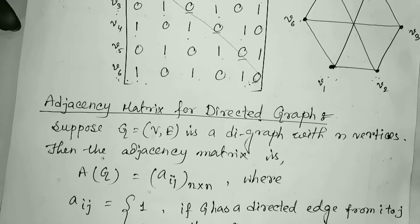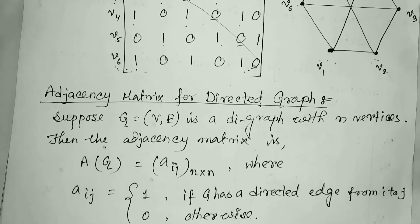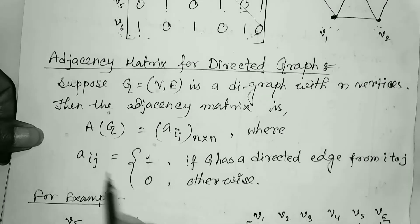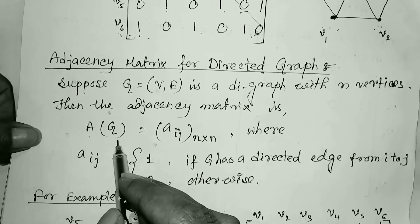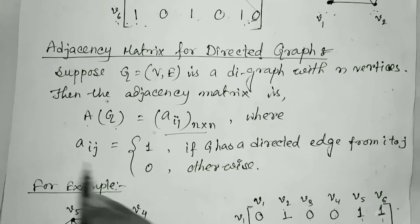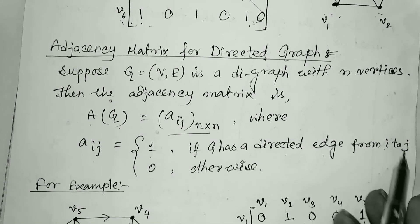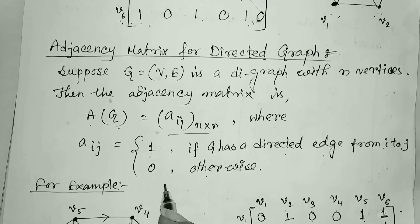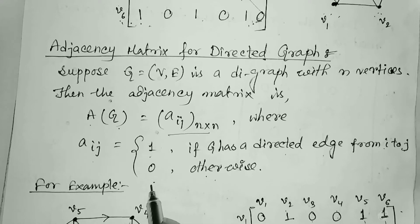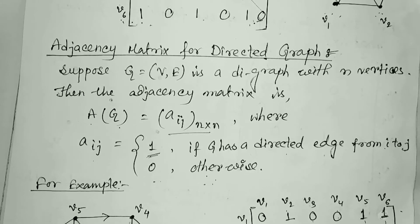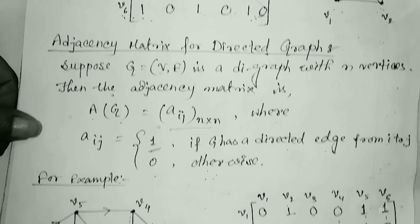Next, the adjacency matrix for a directed graph. If the given graph is directed, A(G) is the adjacency matrix where A(i,j) = 1 if G has a directed edge from vertex i to vertex j, and 0 otherwise. That means, according to the direction, if the edge goes from Vi to Vj we enter 1, but if it goes from Vj to Vi we enter 0.